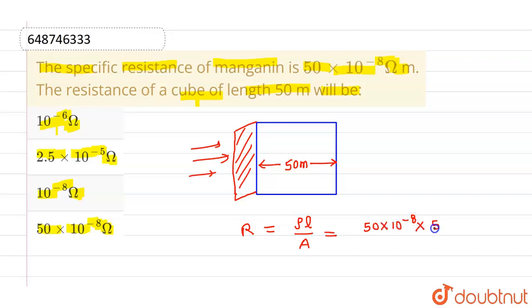The length is given as 50 meter and area is given as, this cross-sectional area will be 50 into 50 since this is a cube. So this is 50 into 50.